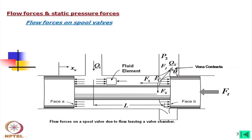This angle is called the jet angle. If we think of the area, it is rectangular for a full opening — we consider pi times d, where d is the spool land diameter. The flow goes out like an umbrella at angle theta, the jet angle. Within that area there is a smaller area called the vena contracta. We must calculate the vena contracta area to find the flow rate and pressure drop.